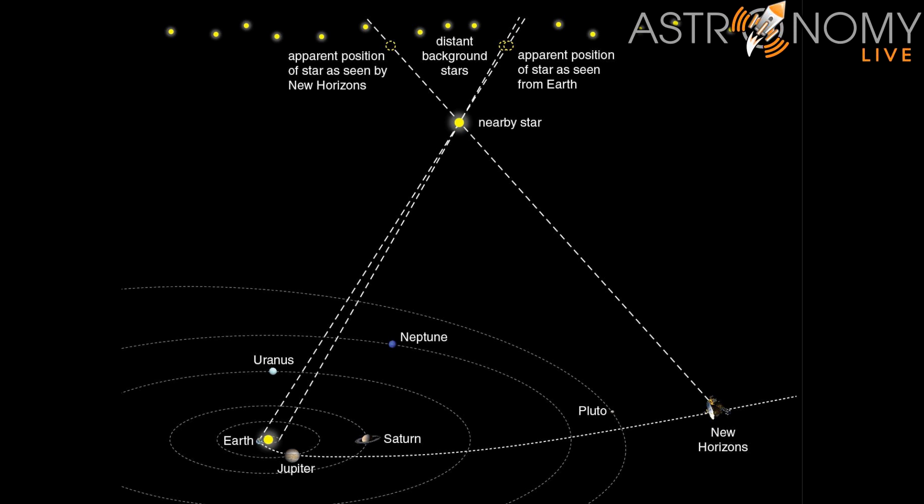The New Horizons team organized this event, which was called the New Horizons Parallax Program, an effort to get amateur astronomers involved in measuring the parallax of a nearby star using the world's longest baseline, the distance between Earth and New Horizons, which was over 4 billion miles at the time of this measurement.